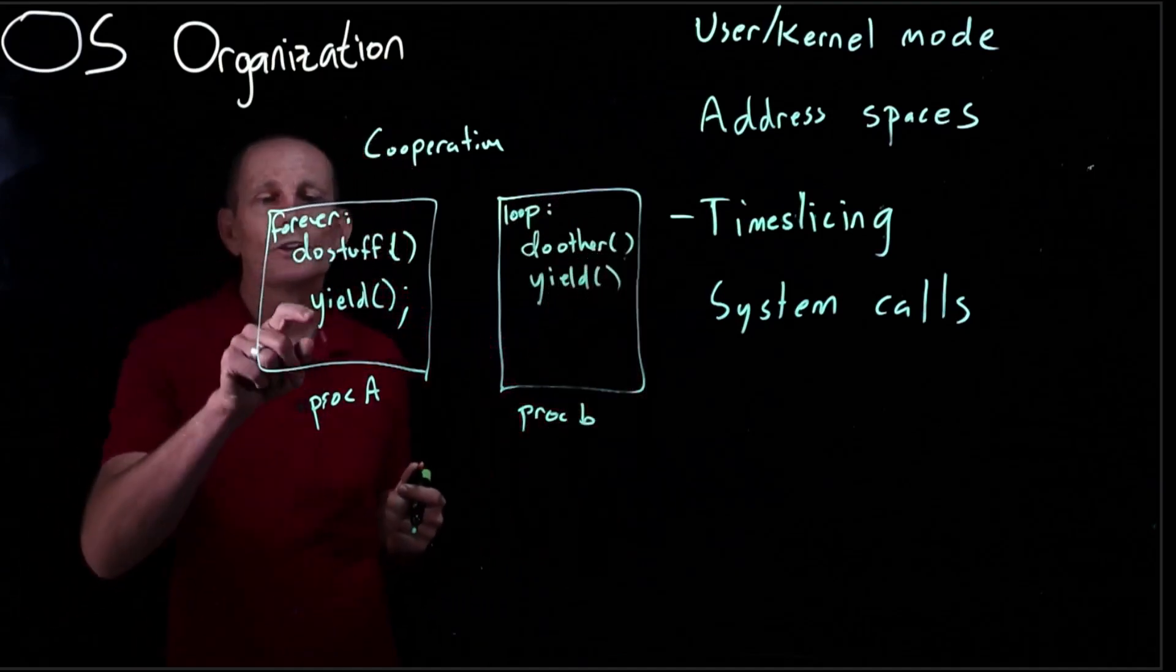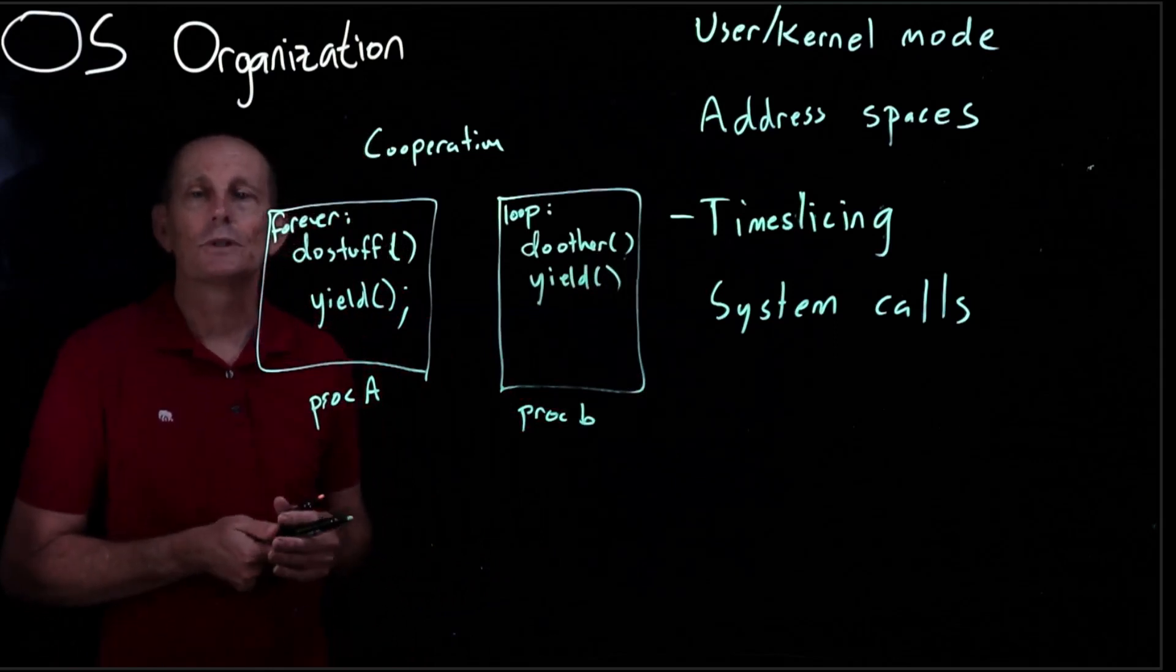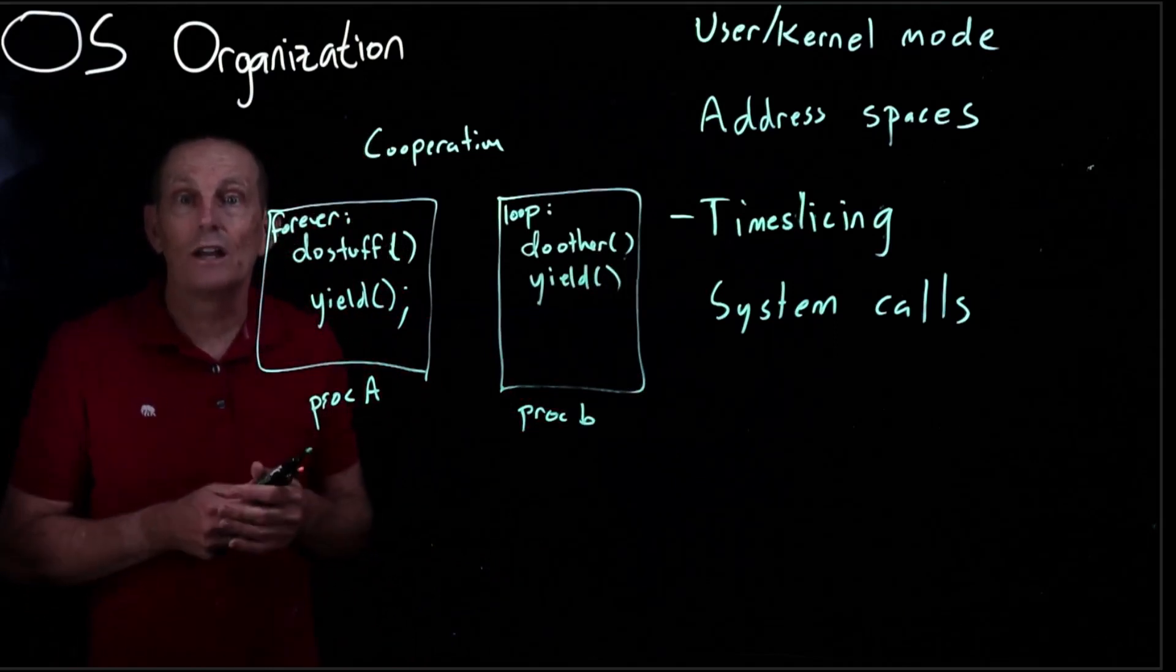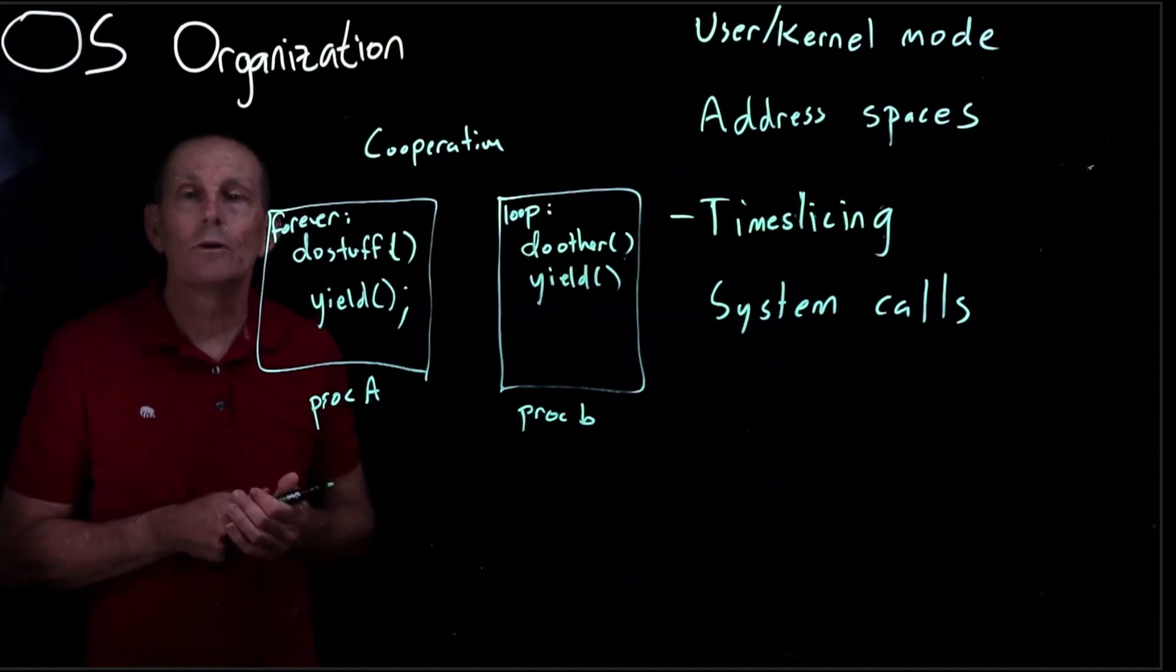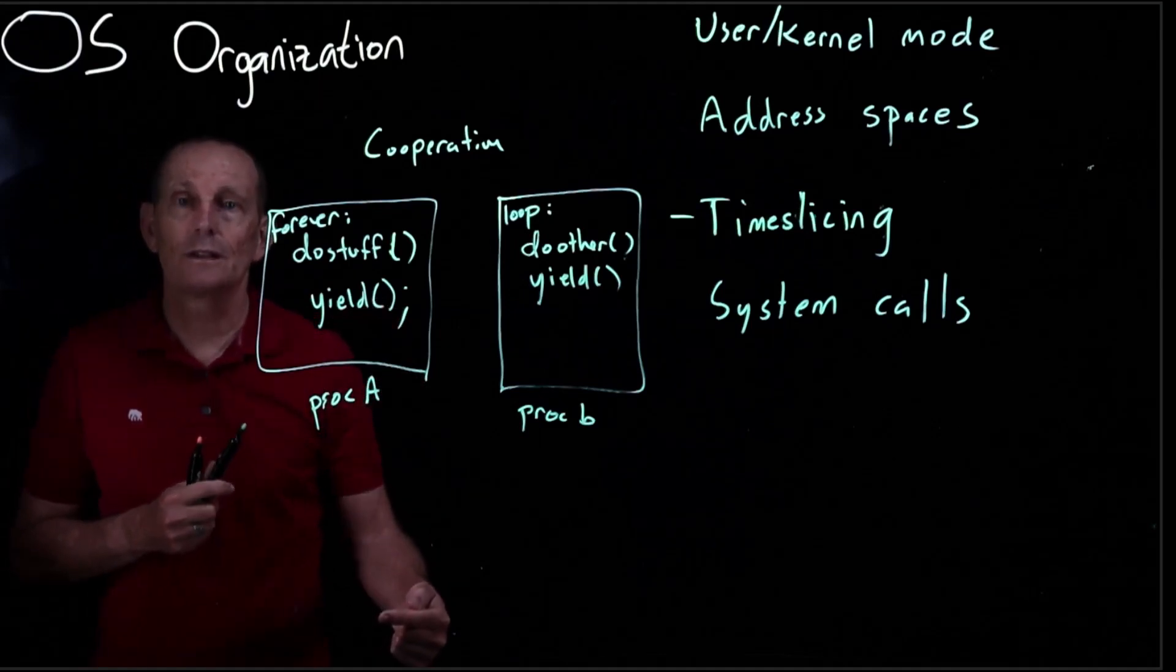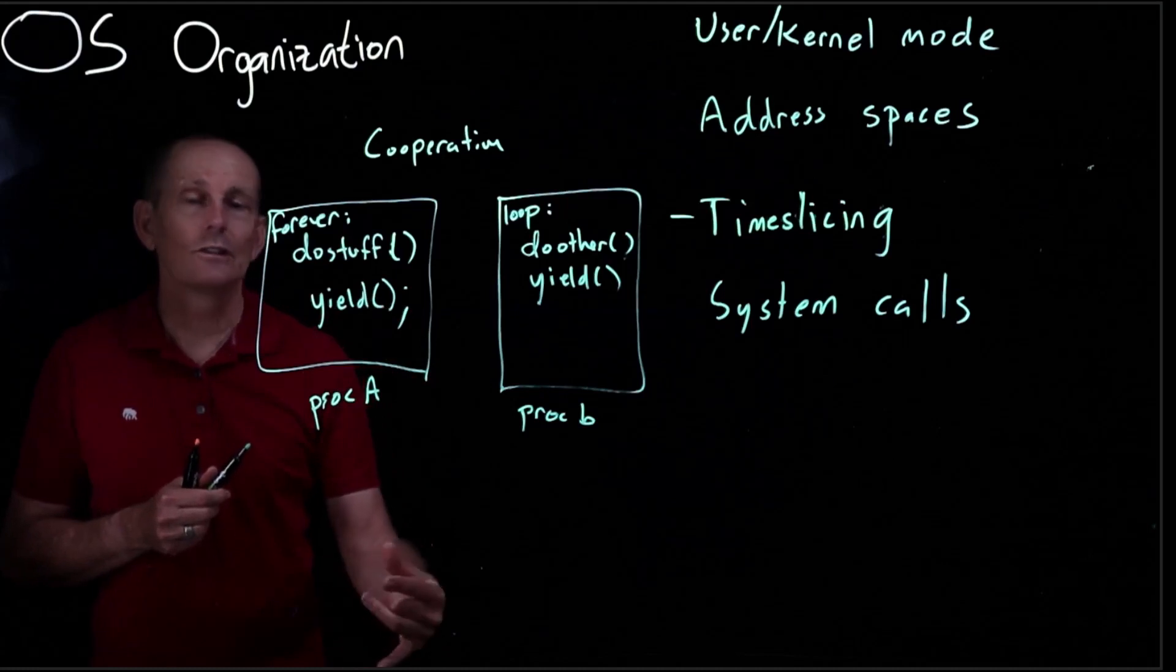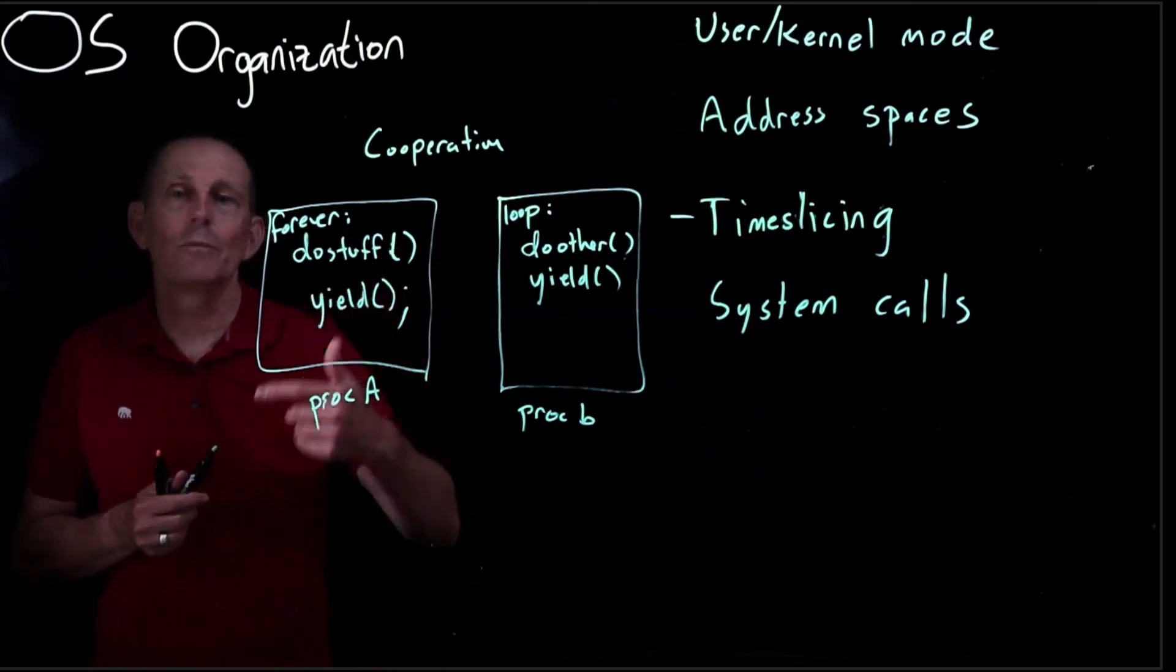So the key is when we call yield what we're saying is I am willing to give up the CPU at this point. If I'm the only process running then yield is gonna basically be a no-op. It's gonna be a quick check to see that nothing else is running. Yield presumably goes into the kernel. That's how this is gonna have to work. So yield is gonna go into the kernel. The kernel is gonna look and say there's no other processes running. Return back to A.